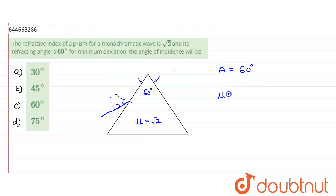So for the case of minimum deviation, μ would be equals to sine I divided by sine R. Now, for the case of minimum deviation, R would be equals to A divided by 2. R would be equals to A divided by 2 if we apply at this interface.